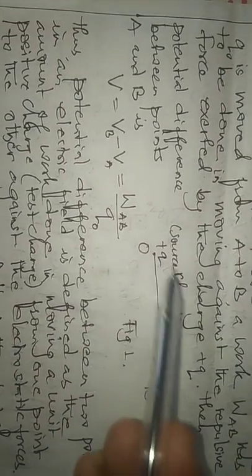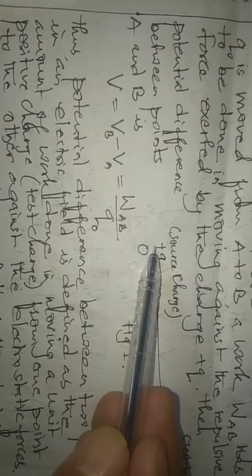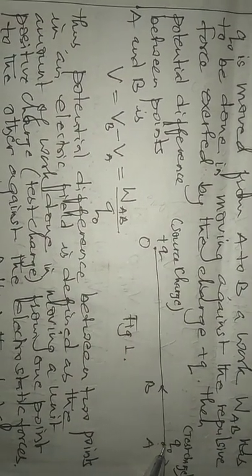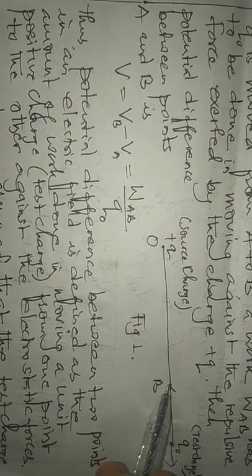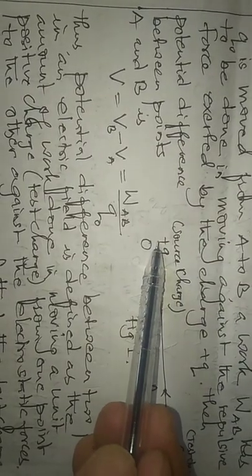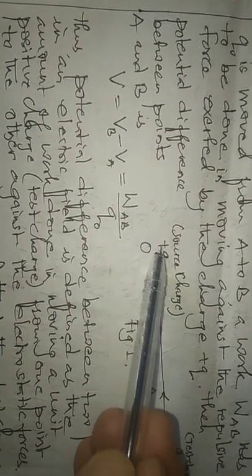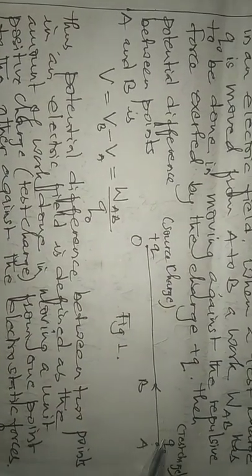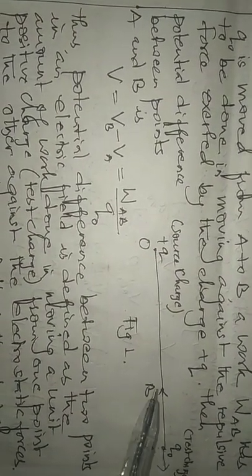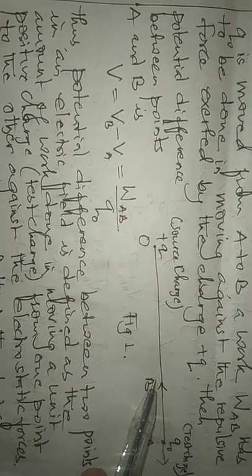This is true when the source charge which creates the field is a positive charge. If the source charge is a positive charge, then point A is lower potential and B is higher potential. But it is not necessary that the source charge is always positive. If the source charge is a negative charge, then point A will be called higher potential and point B will be lower potential.